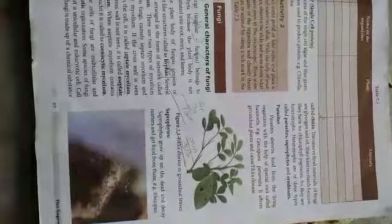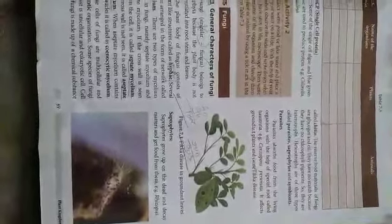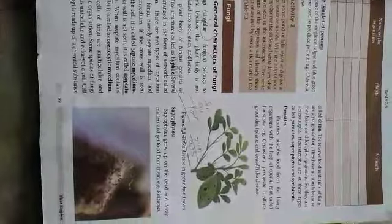Fungi are heterotrophic, not autotrophic. Autotrophic means the organism has chlorophyll and can make its own food. Fungi are heterotrophic, and heterotrophic fungi are of three types: first, parasites; second, saprophytes; and third, symbionts.